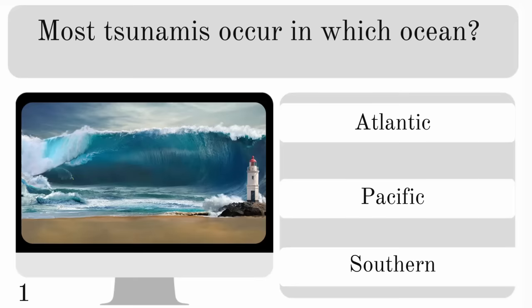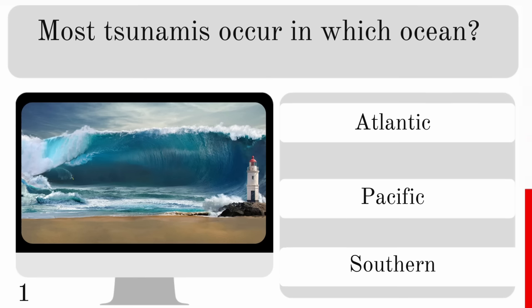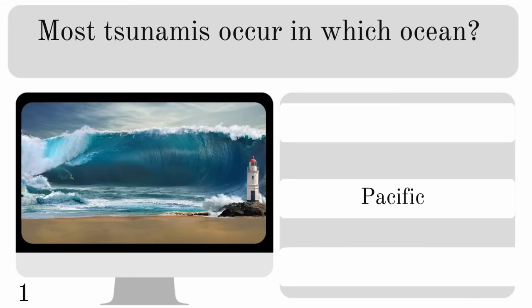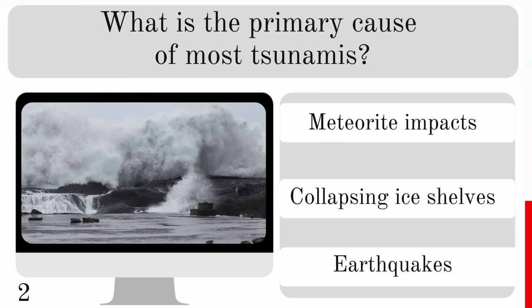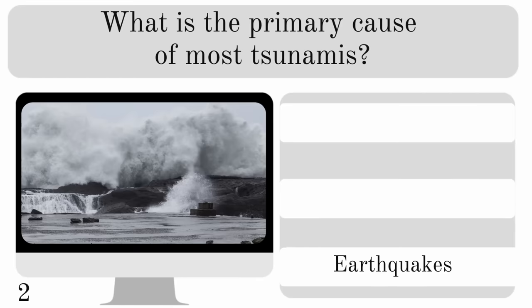Most tsunamis occur in which ocean — the Atlantic, Pacific or Southern? They are most common in the Pacific Ocean. So what is the primary cause of most tsunamis? Is it meteorite impacts, collapsing ice shelves or earthquakes? They're mostly caused by earthquakes.